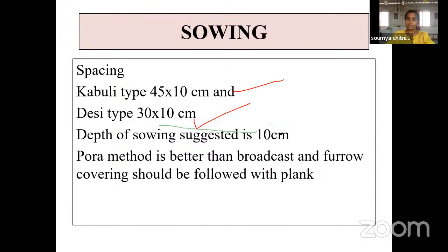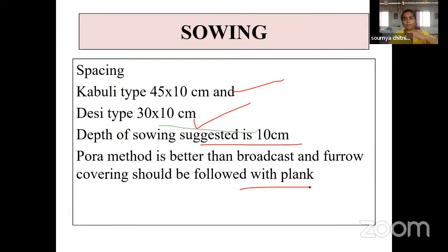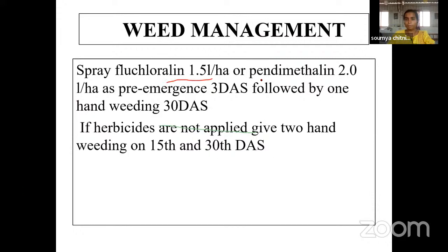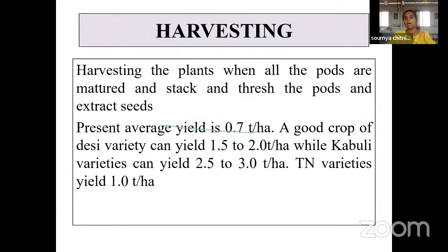Rabi pulses have hypogeal germination. The kera/pora method — placing seeds behind the plow — is better than broadcasting. Flowering and pod filling are critical stages; water stagnation must be avoided at all stages. Pre-emergent herbicides fluchloraline or pendimethalin can be applied 30 days after sowing, or hand weeding on the 15th and 30th day after sowing. Plants are harvested when they turn brown. Present yield is about 700 kg per hectare, but potential is 1.5 to 2 tonnes per hectare.